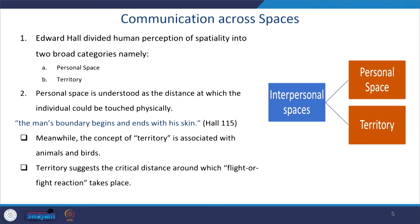Edward Hall divides human perception of space into two broad categories. The first is personal space — at times you want no one around you and want space to relax. If there is interference, you feel hurt and quite different. The other type of space is territory.